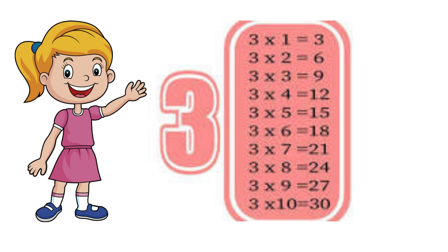Three ones are three. Three twos are six. Three threes are nine. Three fours are twelve. Three fives are fifteen. Three sixes are eighteen. Three sevens are twenty-one. Three eights are twenty-four. Three nines are twenty-seven. Three tens are thirty.